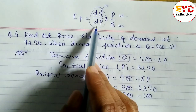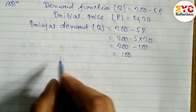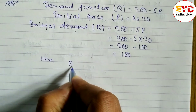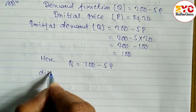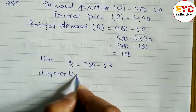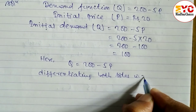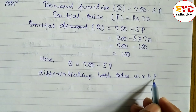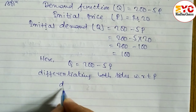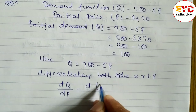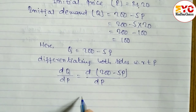We differentiate q equals 200 minus 5p with respect to p on both sides. Since the variable here is p, we differentiate with respect to p. So dq/dp equals d(200 minus 5p)/dp.